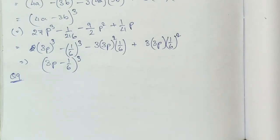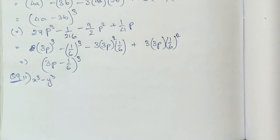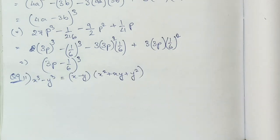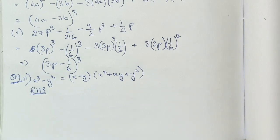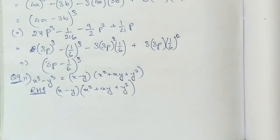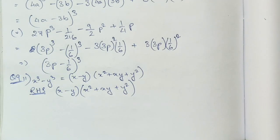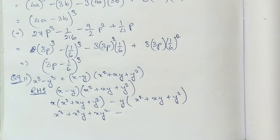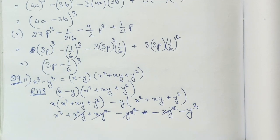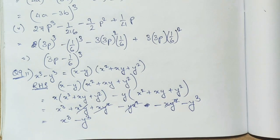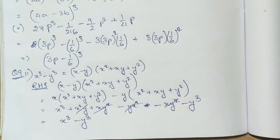We need to prove that x cube minus y cube is equal to this expression. We just have to prove the LHS and RHS to be equal, so I'm taking the RHS here. I'll apply the distributive property like this. So we will get our LHS, so this is the proof.